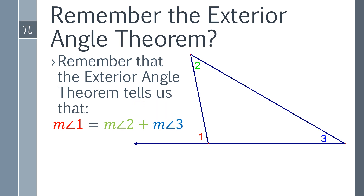The exterior angle theorem tells us that the measure of angle one in our diagram is equal to the measure of angle two plus the measure of angle three.